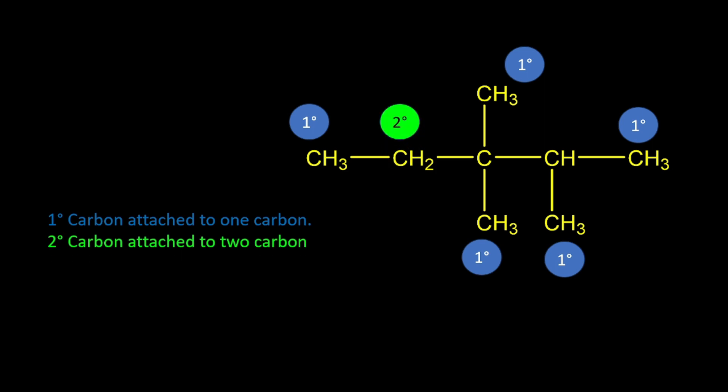Only one secondary atom is there - only one secondary carbon in this structure. Next, tertiary carbon atom - the carbon which is bound to three carbon atoms. That is this one: left side, right side, downside, so three carbons are there.